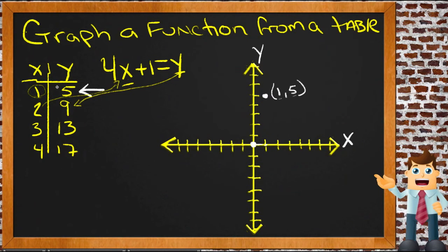Now another point would be, with our information, 2 and 9. So we'd have 1, 2, and then we'd go up to 9, up here. The next one is 3 and 13. 13 is going to be clear off my graph, it's going to be way up here at the top of my screen.